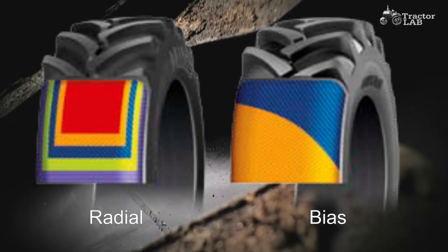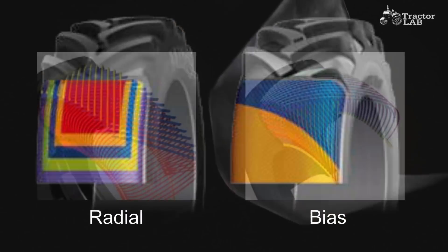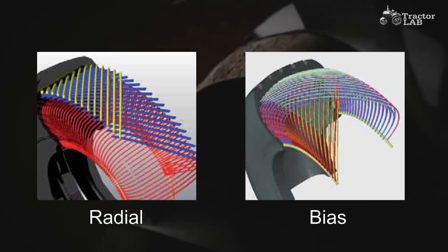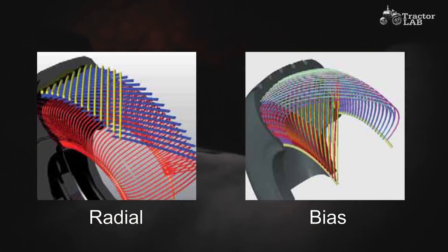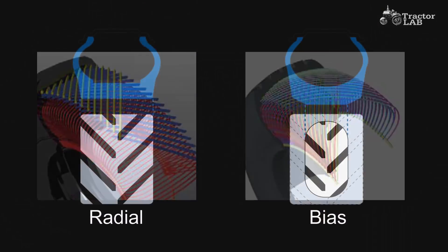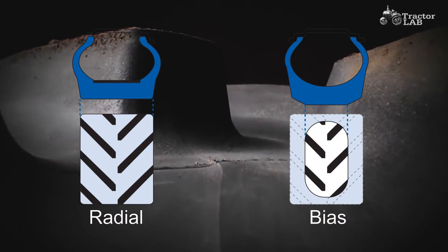In a radial tire, the carcass plies run in a radial direction from one bead to another. Radial tires also have stiff belts in the tread area that restrict growth and stabilize the lugs when they contact the ground.